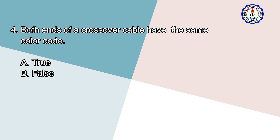Number 4: Both ends of a crossover cable have the same color code. A. True, B. False.